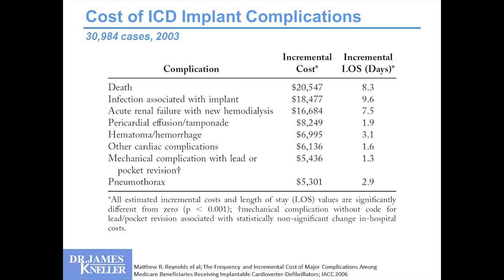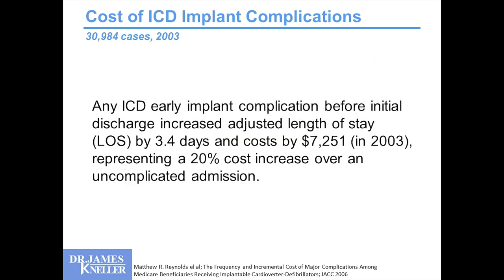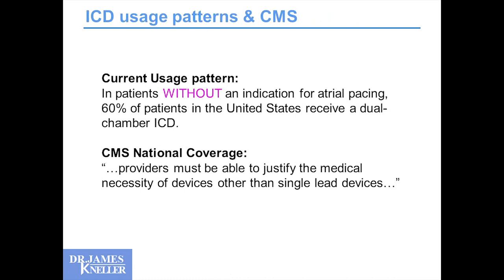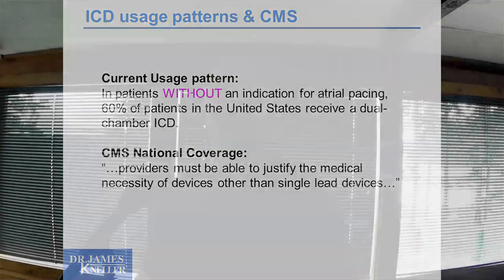CMS is very much aware of this. Any ICD lead implant complication before discharge increases length of stay by 3.4 days and cost on average by $7,000 — and that's 2003 data, so imagine what it is now. That represents a 20% increase overall versus an uncomplicated admission for an ICD procedure. Currently, 60% of patients in the United States without an indication for atrial pacing have received a dual-chamber ICD. CMS has made a statement that providers must be able to justify the medical necessity of devices other than single-lead devices — and both my colleague and I have been faced with forms requiring exact documentation of why we're making these decisions.